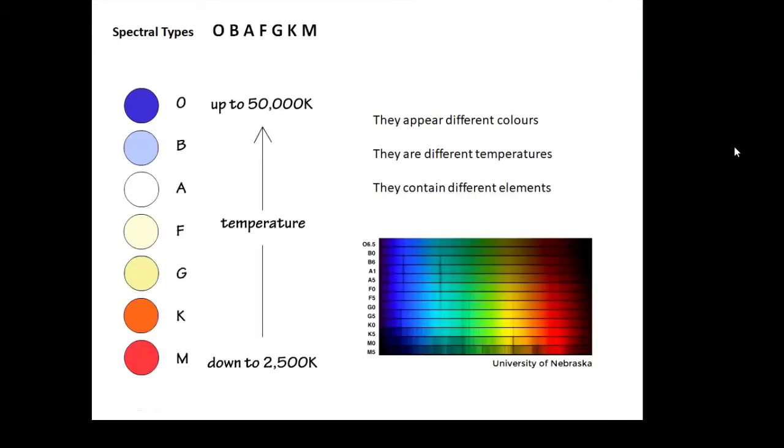So what spectral types are there? What are the different types of star? O B A F G K M. The easiest way to remember it, very traditional way: Oh Be A Fine Girl Kiss Me. These are the different types of star.